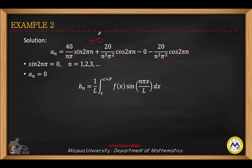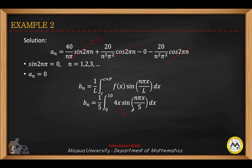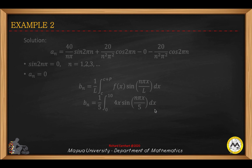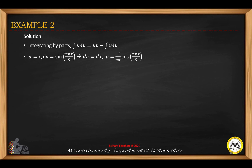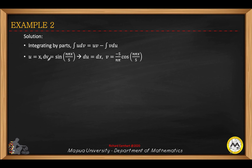Now for the coefficient b sub n: that is 1 over l times the integral from c to c plus b of f(x) sine(nπx/l) dx. Substituting the value of l gives 1 over 5, with f(x) equals 4x and sine(nπx/5). We also integrate this by parts. Take x as u and sine(nπx/5) dx as dv. So u is x, du equals dx. Integrating dv gives v equals negative 5 over nπ times cosine(nπx/5). Substituting the limits: